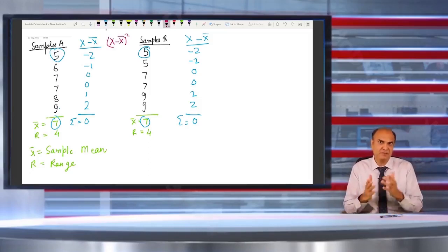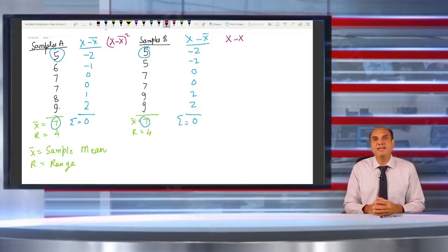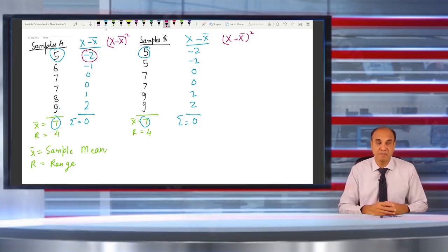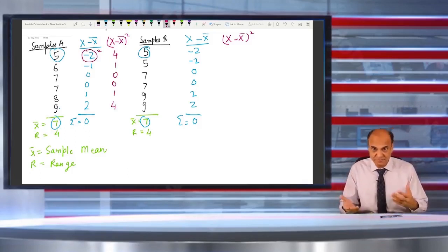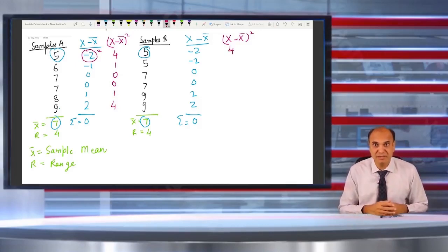Once I square the distances, the first one in vendor A is minus 2 into minus 2, that is 4. The second is minus 1 into minus 1, that is 1, and then 0, 0, 1, and 4.